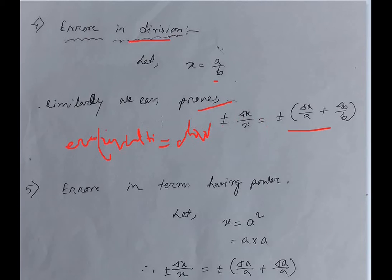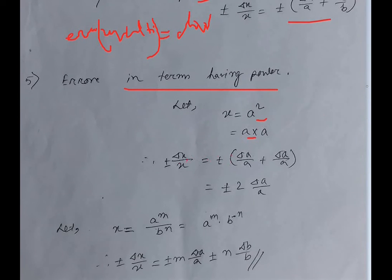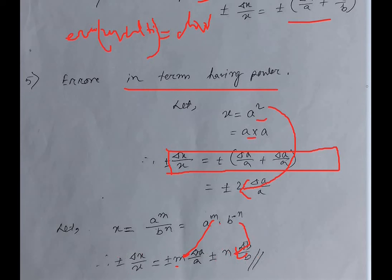Next: error in terms having powers. Suppose x equals a squared. We can write a squared as a into a, which is multiplication. So del x by x becomes del a by a plus del a by a, which equals 2 times del a by a. The power 2 appears as a coefficient in the error. In general, if x equals a to the power m divided by b to the power n, then del x by x equals m times del a by a plus n times del b by b, with plus-minus throughout.